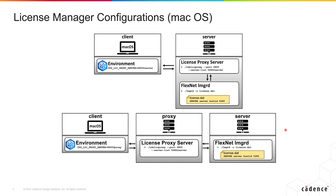If you're using a Mac operating system the configurations are going to be a little bit different. You're going to need a Mac client machine where you install the Fidelity Pointwise software, and then you're going to need a server machine. In this configuration the server machine runs both the License Proxy Server and the License Manager, so this server has to be a Linux machine.